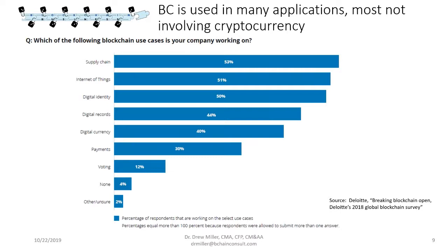Digital identity and digital records are the next two major areas. The best example is medical records: if you've got medical records you want matched to you, you'll use your digital identity so you can control who gets access, keeping your name personal with a code rather than a name. Note that digital currency — the very first blockchain application with Bitcoin — is not necessarily a big area of business use. Many business blockchains don't use cryptocurrency at all; there's a misconception that blockchain is all about cryptocurrency, which is not so in business applications.